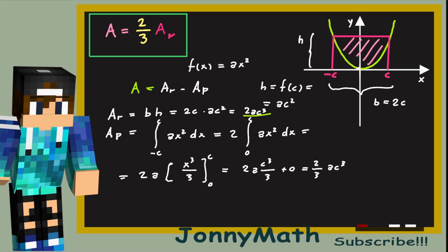Now we have a formula for the area of the rectangle, and we have a formula for the area underneath our parabola. So we can combine them together into our previous equation.